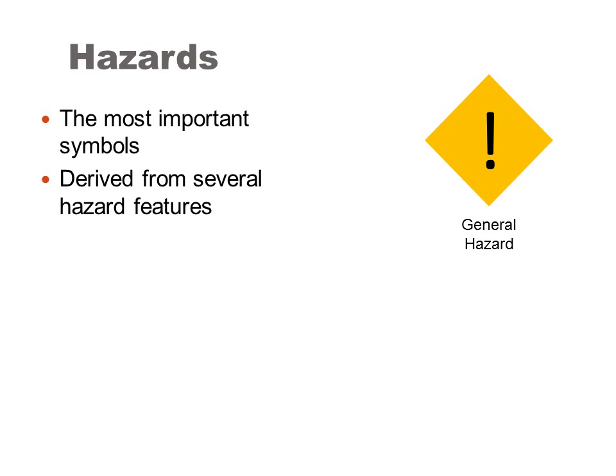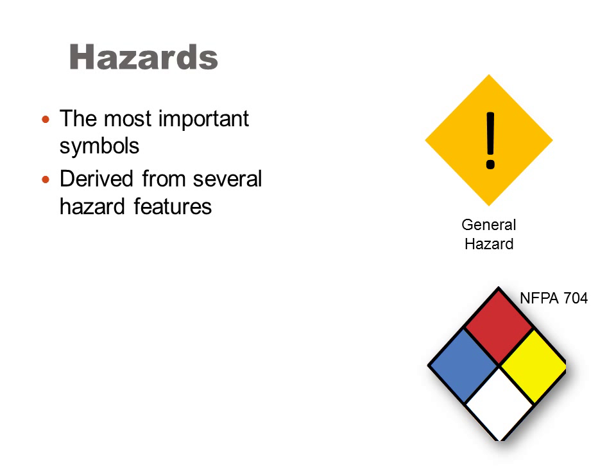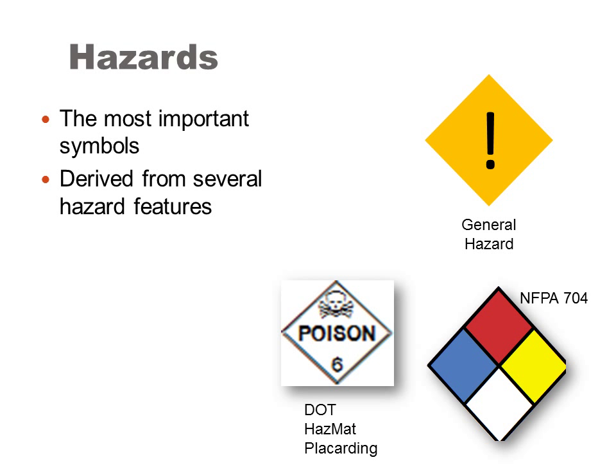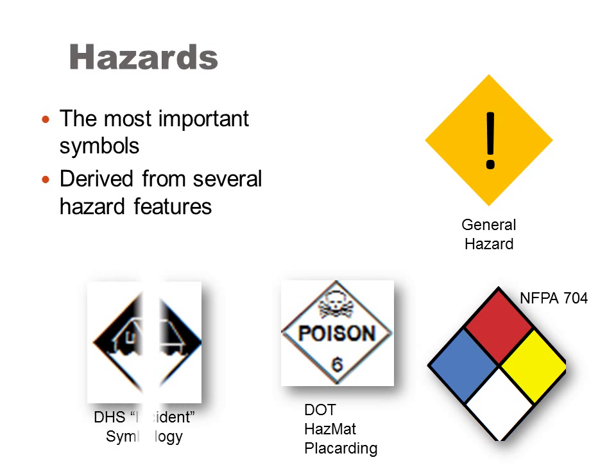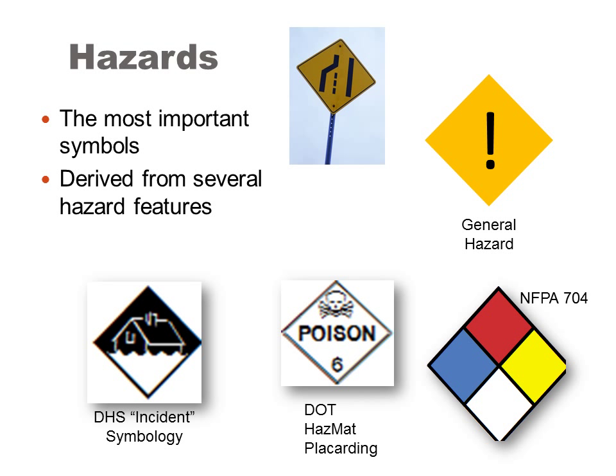Hazard symbols are perhaps the most important symbol. They denote features that could be harmful to responders and should be either avoided or mitigated. The diamond is the preferred shape of this symbol. This is due to the abundant number of symbols and signs where diamonds are used for hazards, such as the NFPA 704 symbol, DOT hazmat placarding, DHS incident symbology, and even road signs — all share the same common shape.